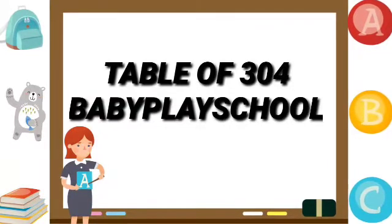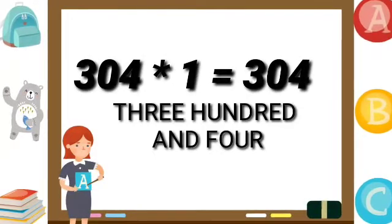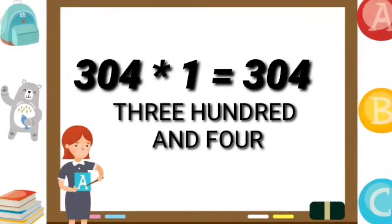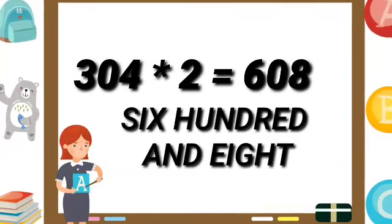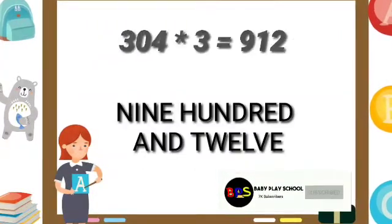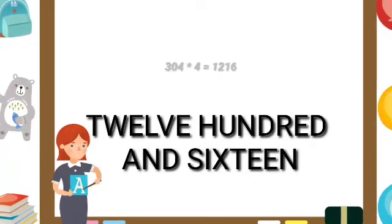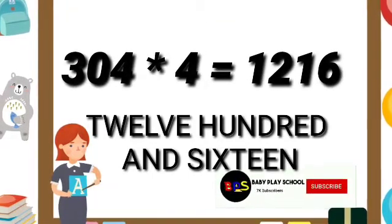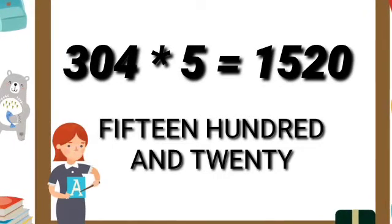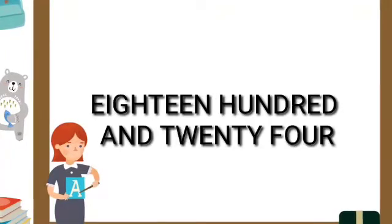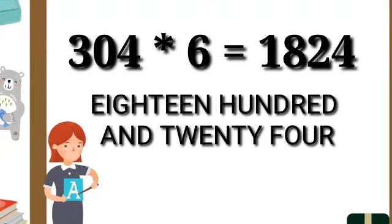Let's start the table of 304. 304 ones are 304. 304 twos are 608. 304 threes are 912. 304 fours are 1216. 304 fives are 1520. 304 sixes are 1824.